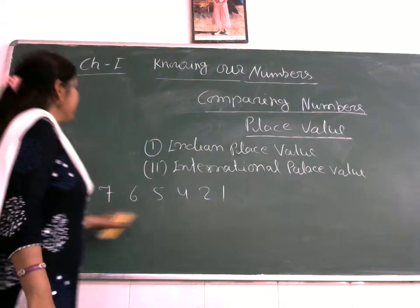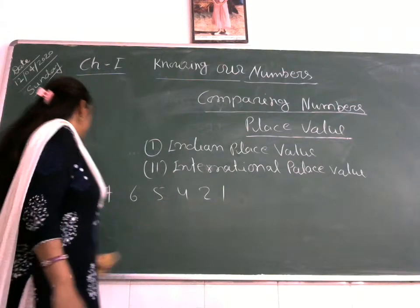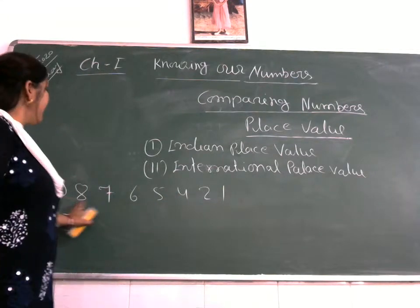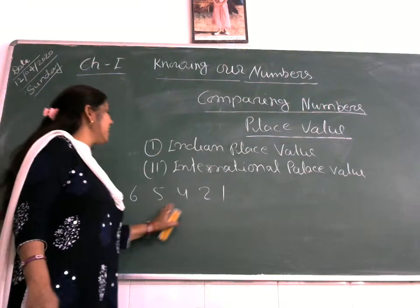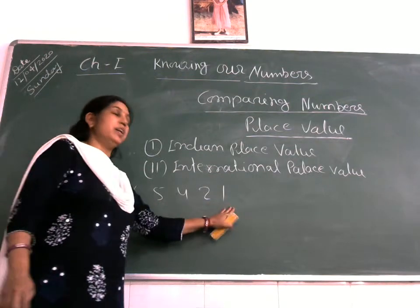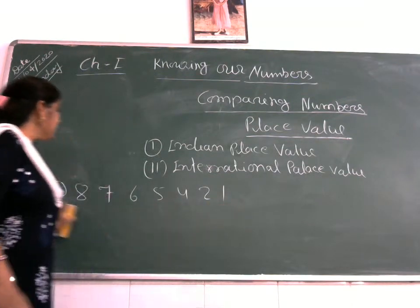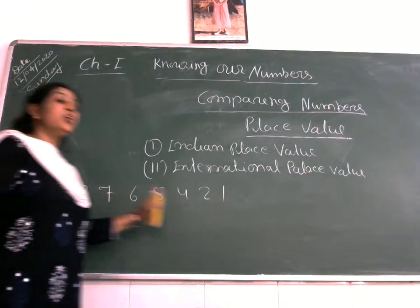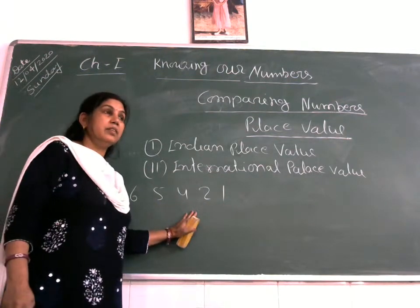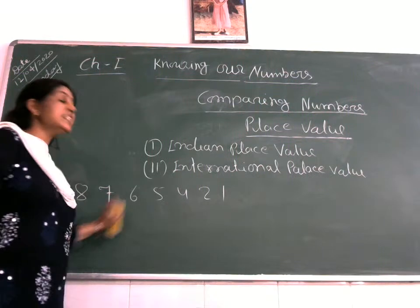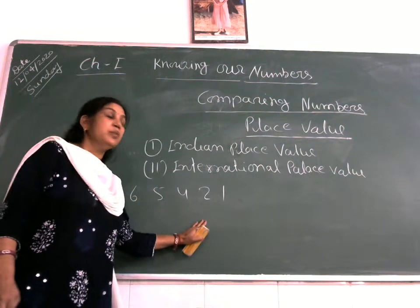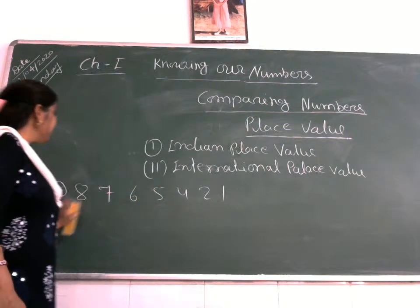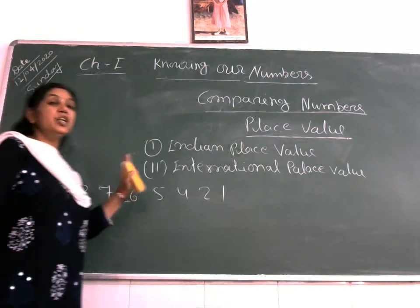I have written some numbers here: 9, 8, 7, 6, 5, 4, 2, 1. This is written in descending order. I have only written the numbers here for the place value chart.